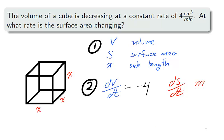Our second question. We're given the rate of volume change with respect to time. dV/dt is equal to negative 4, and we're searching for dS/dt, the rate that the surface area is changing.